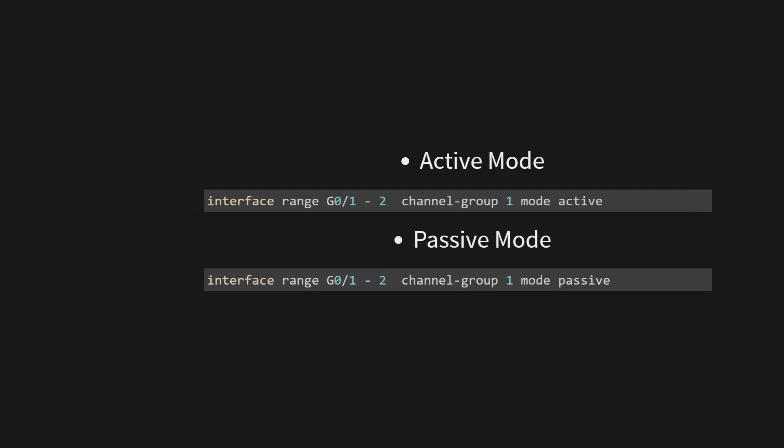LACP also offers active and passive modes, similar to PAGP's desirable and auto. LACP actively sends LACP packets to form a channel, and the passive side responds to those packets. LACP is the industry standard protocol for EtherChannel, ensuring interoperability between different vendors. In active mode, the interface actively sends LACP packets to form a channel with a compatible partner. This command configures GigabitEthernet 0/1 and GigabitEthernet 0/2, grouping them into port channel 1. The negotiation mode used here is active.